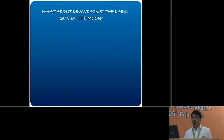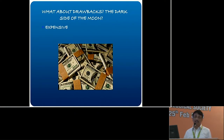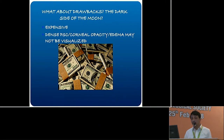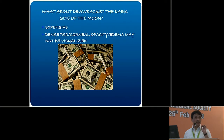What about the drawbacks — the dark side? First, it is very expensive. Second, not all cataracts can be imaged: dense posterior subcapsular cataracts, nuclear cataracts grade 4, corneal opacities, and edemas may not work well because the technique depends on patient fixation. So these calculations may not always be reliable.